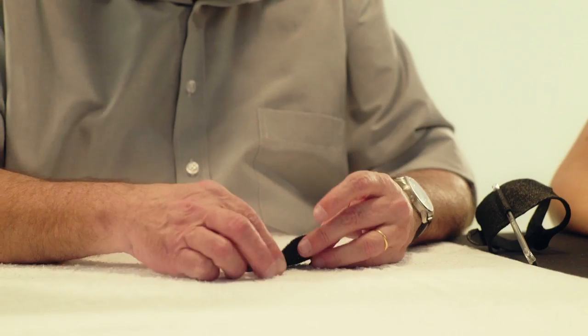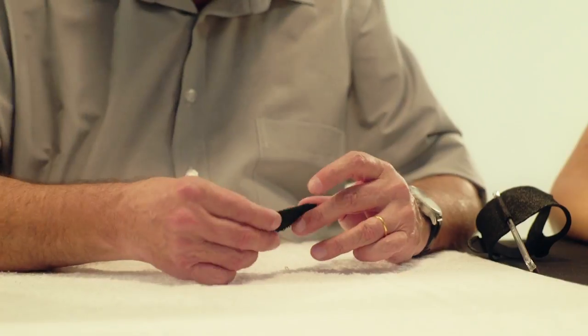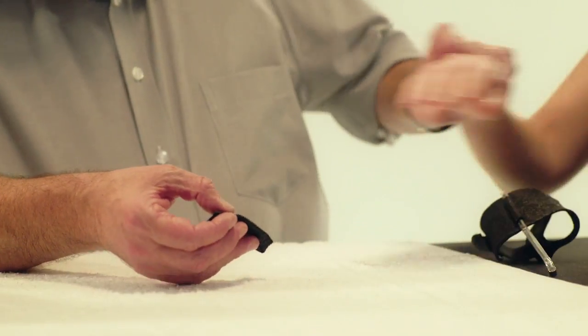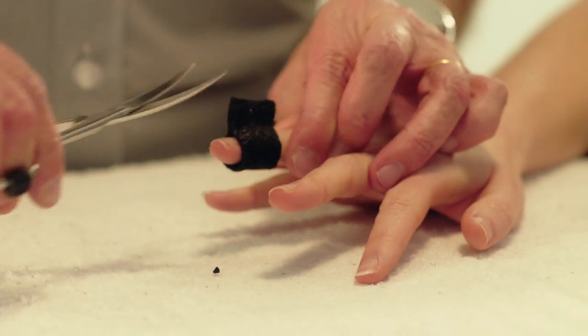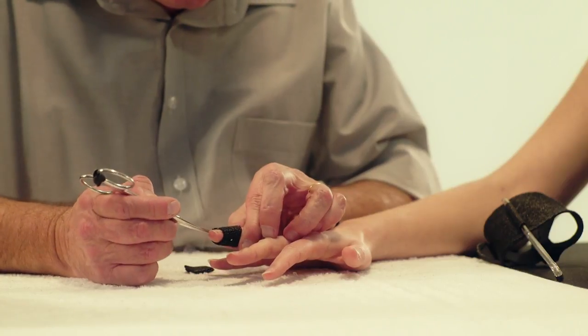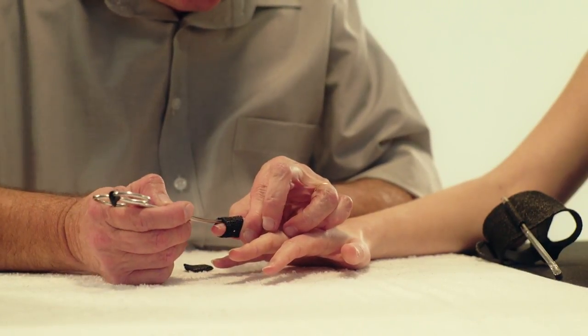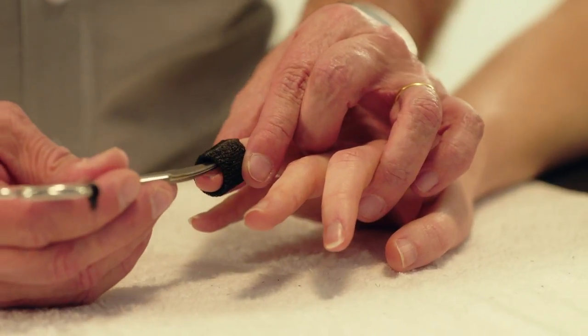Take a small band of OrphiCast, heat it and fold it double lengthwise. Wrap the OrphiCast around the DIP joint and cut the excess material. Take the curved scissors and slide them underneath the finger cap while it hardens to ease donning and doffing of the finger cap.